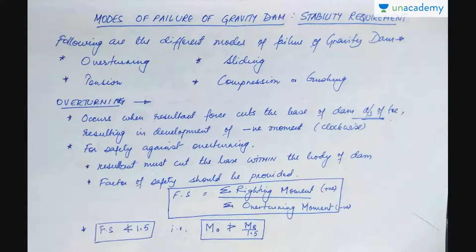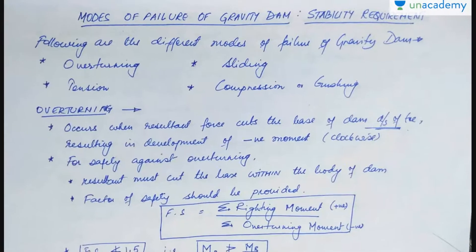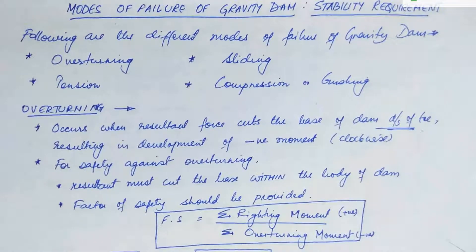Though concrete gravity dams are very stable, but they may fail in different conditions. Let's study about the different modes of failure of a concrete gravity dam. Following are the different modes of failures of a gravity dam. A gravity dam may fail by overturning, sliding due to tension or maybe because of compression. Compression means crushing.